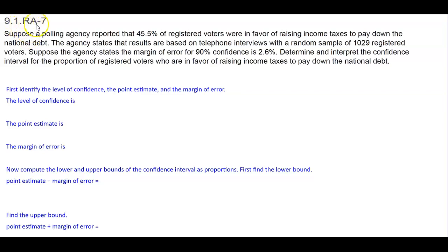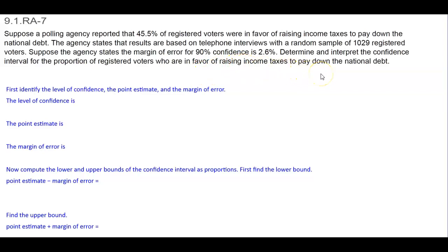Section 9.1.RA-7. Suppose a polling agency reported that 45.5% of registered voters were in favor of raising income taxes to pay down the national debt. The agency states that the results are based on telephone interviews with a random sample of 1,029 registered voters. The agency states the margin of error for 90% confidence is 2.6%. Determine and interpret the confidence interval for the proportion of registered voters who are in favor of raising income taxes to pay down the national debt.